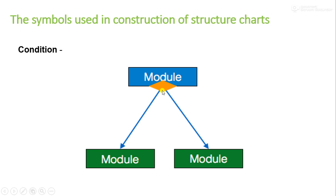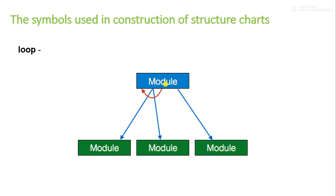If we want to represent a condition in the structure chart, we use a diamond symbol. For example, a module may call one sub-module or another based on some condition. If we want to check some condition and based on that condition one module calls another module, we represent that condition using a diamond box.